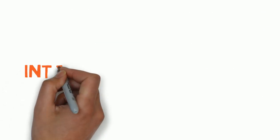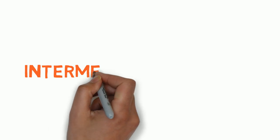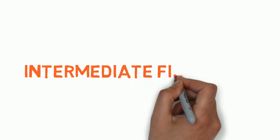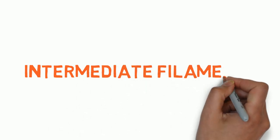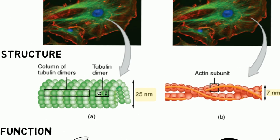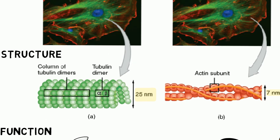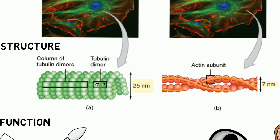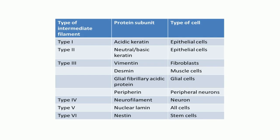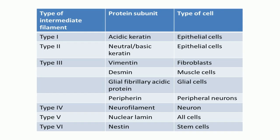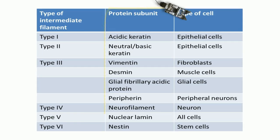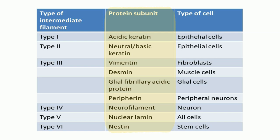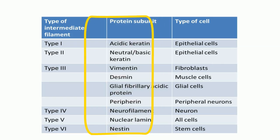In this video, we will be focusing on the intermediate filaments. Unlike microtubules and microfilaments, which are made up of a particular type of protein subunit, intermediate filaments are made up of different subunits. Hence, intermediate filaments can be classified into six types.